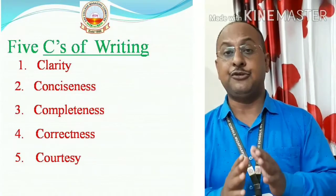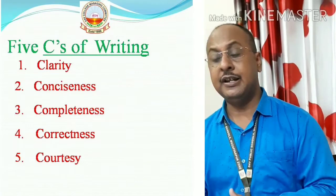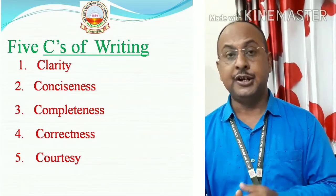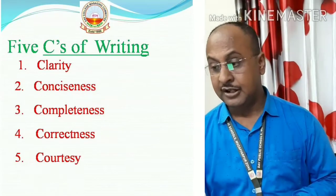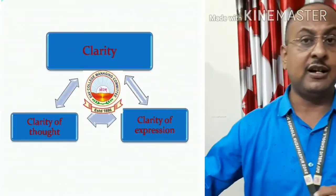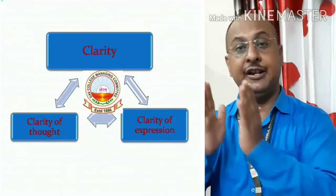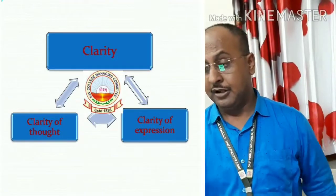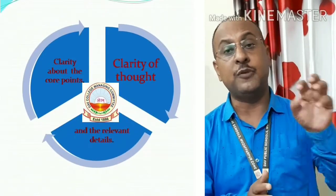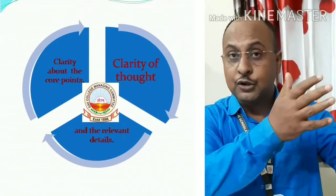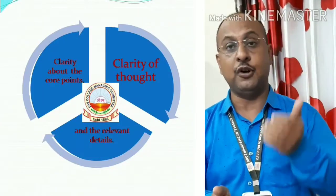What actually constitutes good writing? The five C's are: clarity, conciseness, completeness, correctness, and courtesy. The first is clarity. By clarity, we mean clarity of thought and clarity of expression — what we have to write, how we have to write. The core points should come clearly, and the relevant details should fall in place.